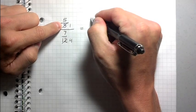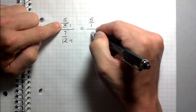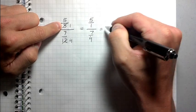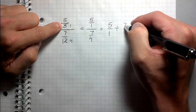So if I rewrite this, it's simply five over one divided by seven over four, which is five over one divided by seven over four.